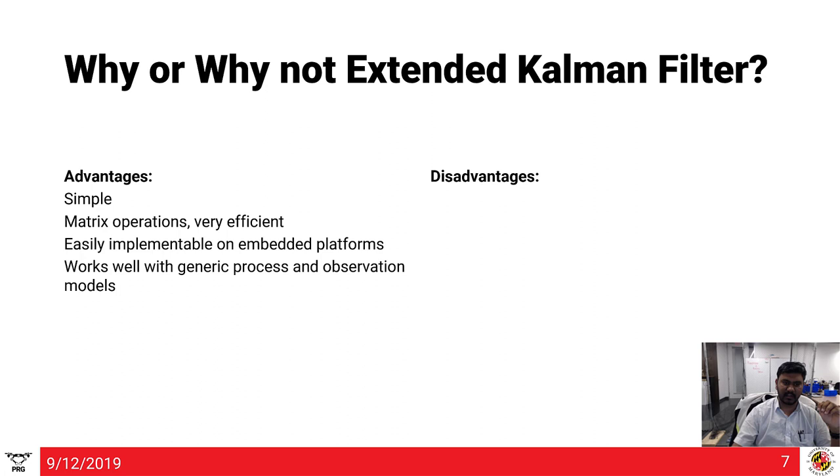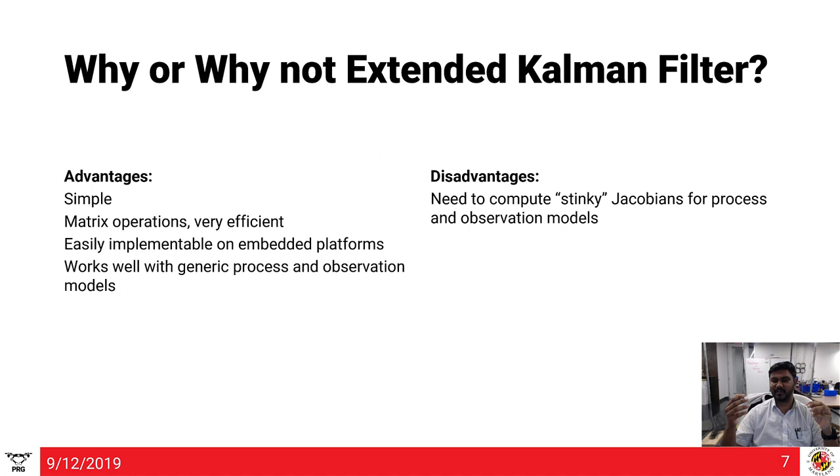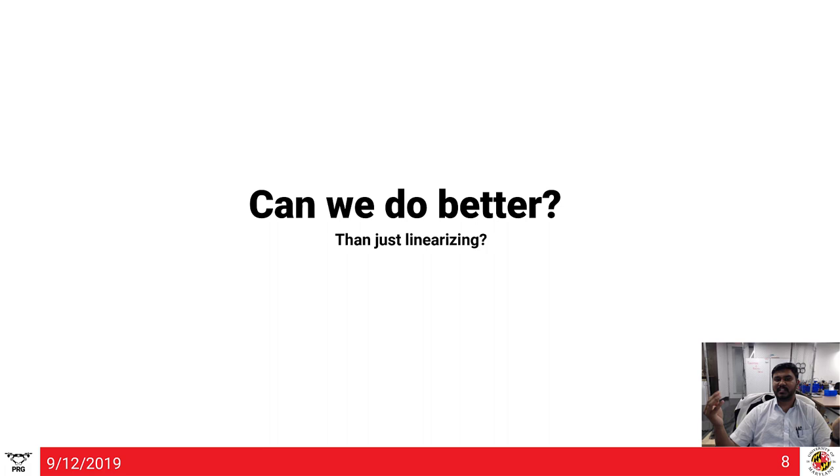The disadvantages are as follows. We need to compute these stinky Jacobians for process and observation models. People don't really like it because it's very rigorous mathematically and pretty painful to compute by hand or using computers. Nowadays you can use symbolic toolbox in MATLAB or Python, but they won't simplify them, so it becomes really cumbersome and defeats the advantage of being simple. It can only deal with unimodal distributions. Can we do better than just linearizing using a Taylor series?